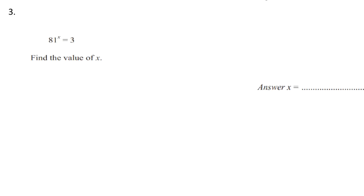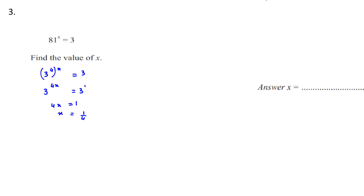Question number 3: 81 to the power of x is equal to 3. Find the value of x. Our base is 3, so find what power of 3 gives 81 — that's 3 to the power of 4, equal to 81. The x is outside the bracket, so we multiply the powers to get 3 to the power of 4x equal to 3 to the power of 1. Because the base is the same, they cancel, giving 4x equals 1. Bringing 4 to the other side gives x is equal to 1 over 4.